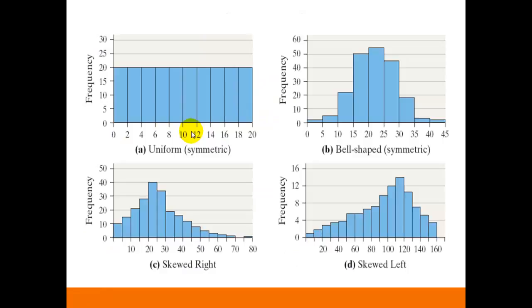Here are four histograms. This one has a uniform distribution. Again, every frequency is the same for each class. This one is bell-shaped. Again, we have the highest point in the middle and it's approximately symmetric on each side. And notice that we have a tail on the left and a tail on the right.